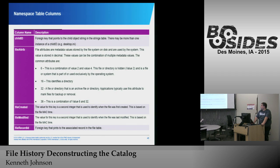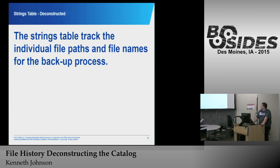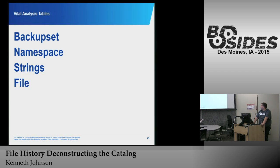The Namespace table also stores when the file was created, when it was last modified, the parent ID, the status, when it was first seen, and the USN journal entry in which it was created or updated. The String table contains the file path, file directory, and file name all in a common string format. When doing analysis, I look at the Backup Set, the Namespace, the Strings, and the File table.